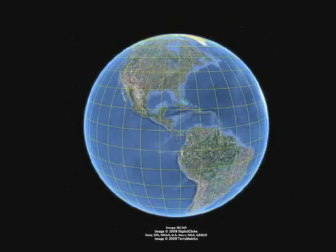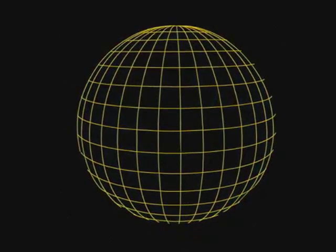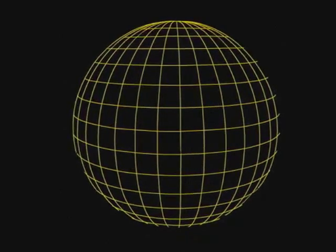To find precise locations, parallels of latitude and meridians of longitude form an invisible grid over the Earth.